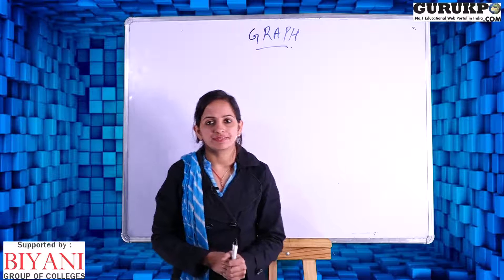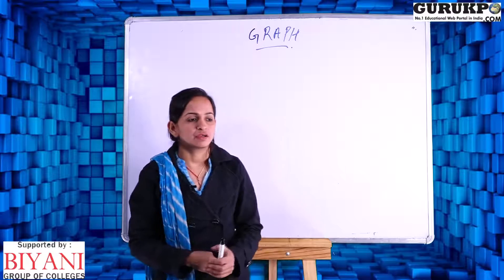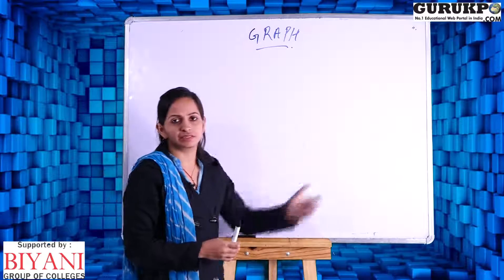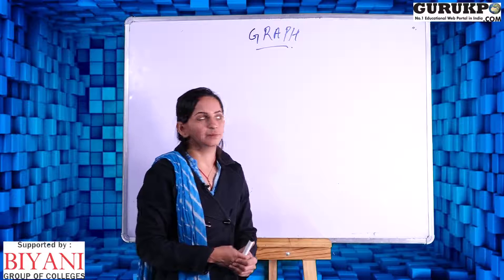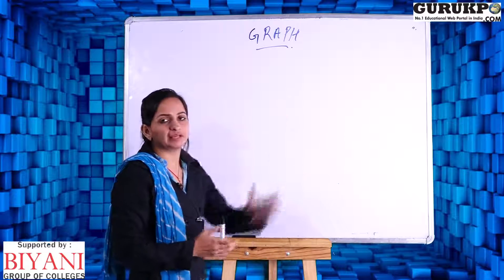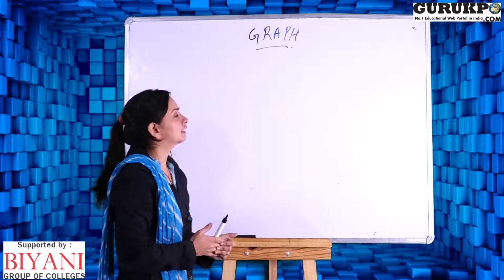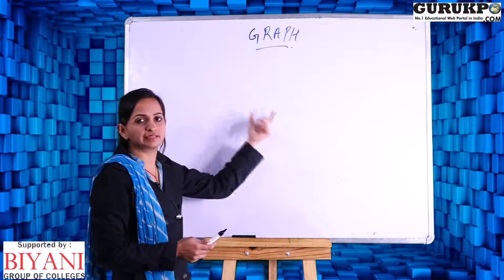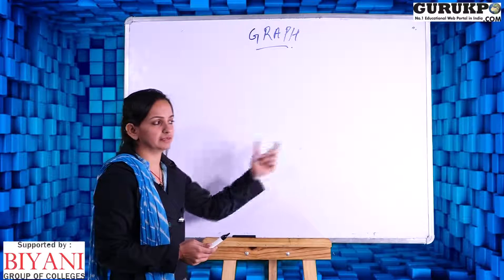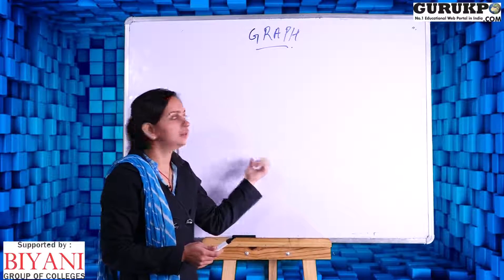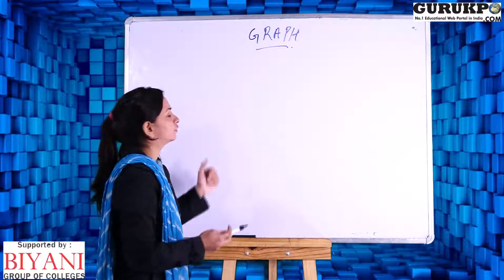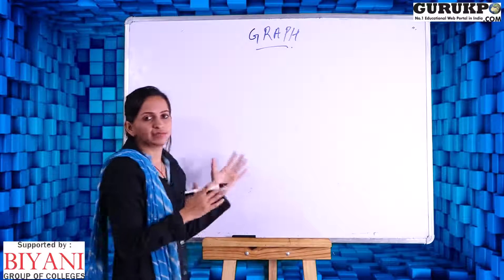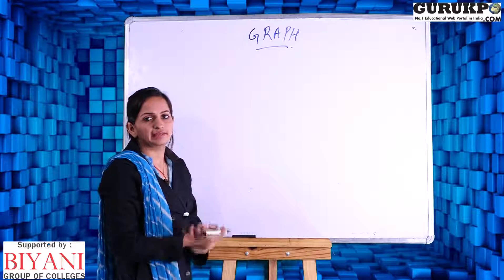Let us understand what is a graph. A graph is a graphical representation of data, and in discrete maths we define a graph with the help of sets. So a graph is a set of vertices and edges.